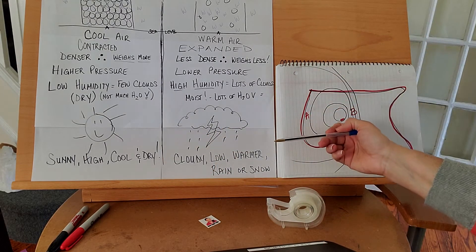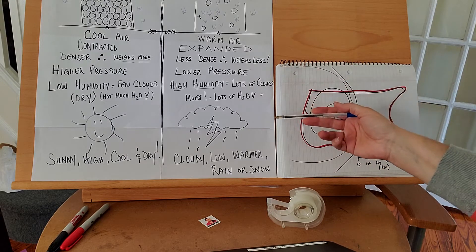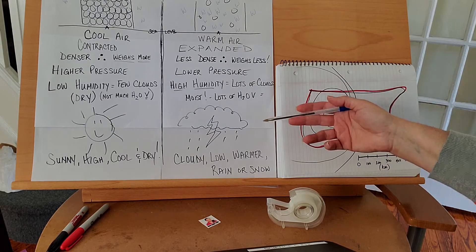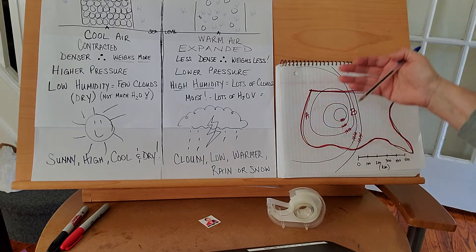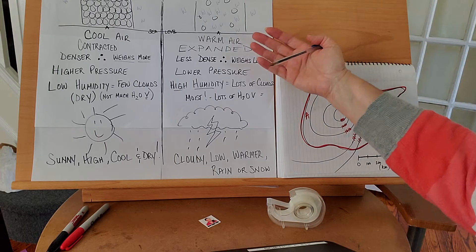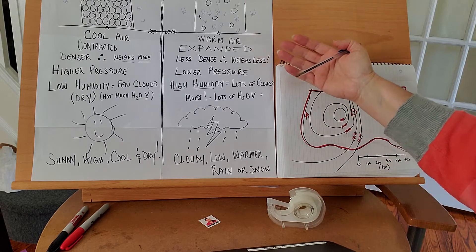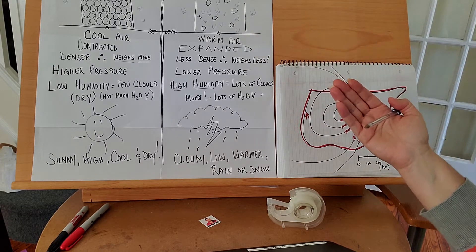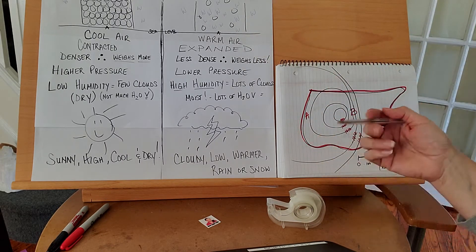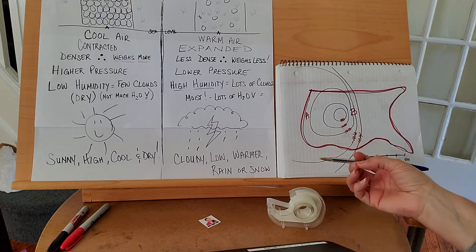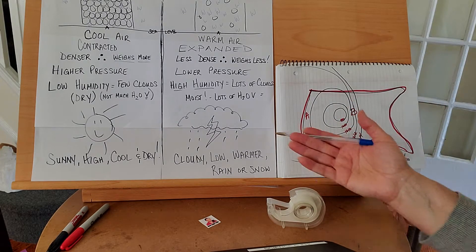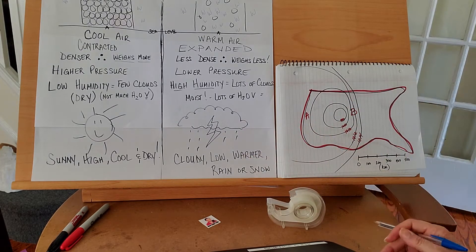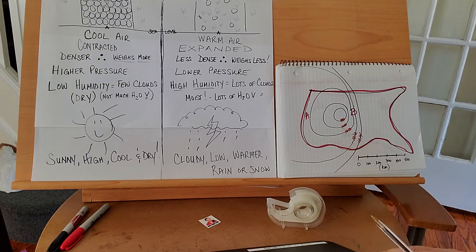The opposite is also true. Warm air is expanded, so it exerts less pressure and allows water vapor to move in. That allows it to become moist, damp, humid, cloudy, rainy, snowy — cloudy, low, warmer, rain, or snow. But what about wind?